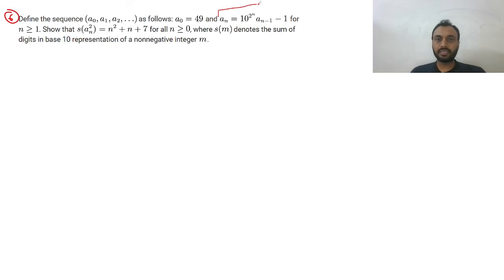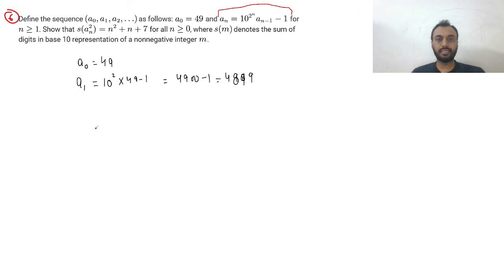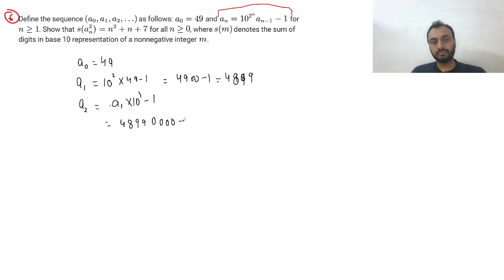Let us figure out the first few values. A₀ is given as 49. For A₁, it is 10² × 49 − 1, which is 4900 − 1 = 4899. For A₂, it is A₁ × 10⁴ − 1, which is 4899 followed by four zeros minus 1, giving 4898 followed by four nines.